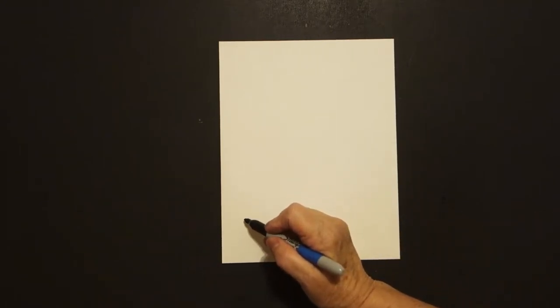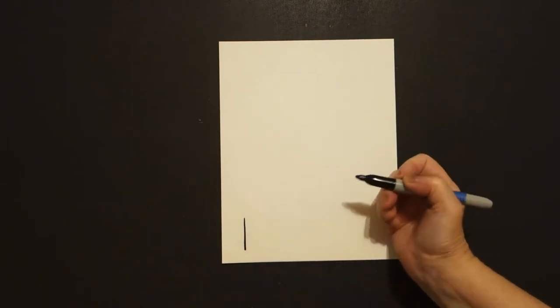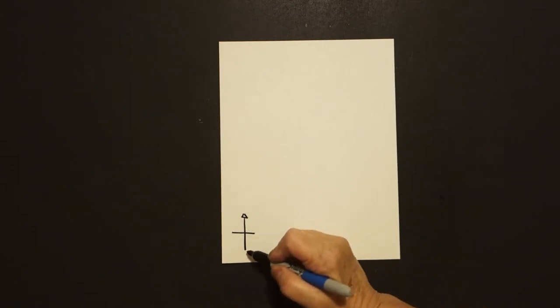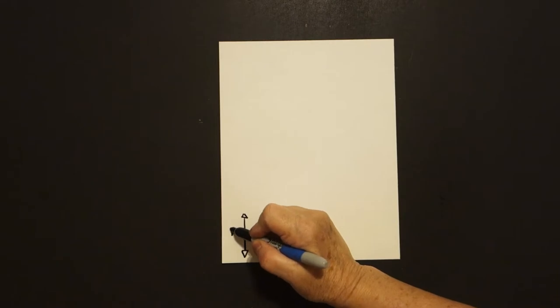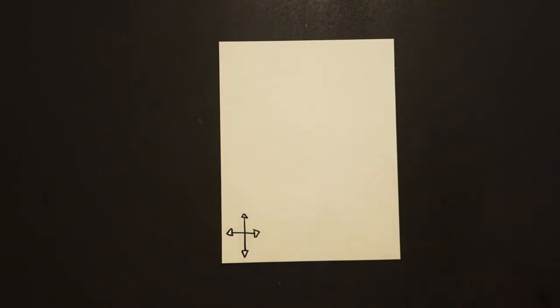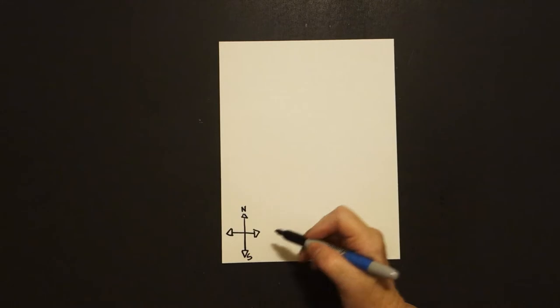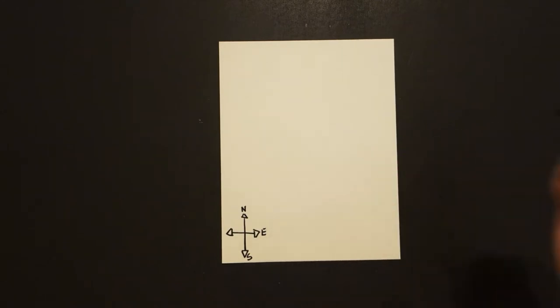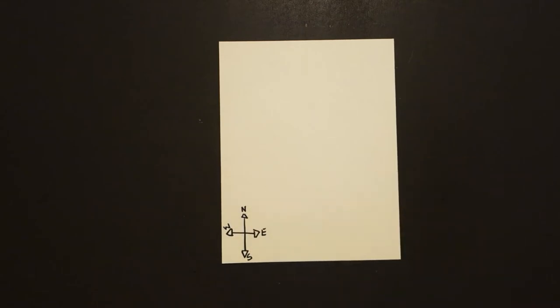I'm going to start off over here in the left corner down below and draw one straight line across, then triangle, triangle, triangle, triangle. Up top is N for north, south at the bottom, east on the right, west on the left.